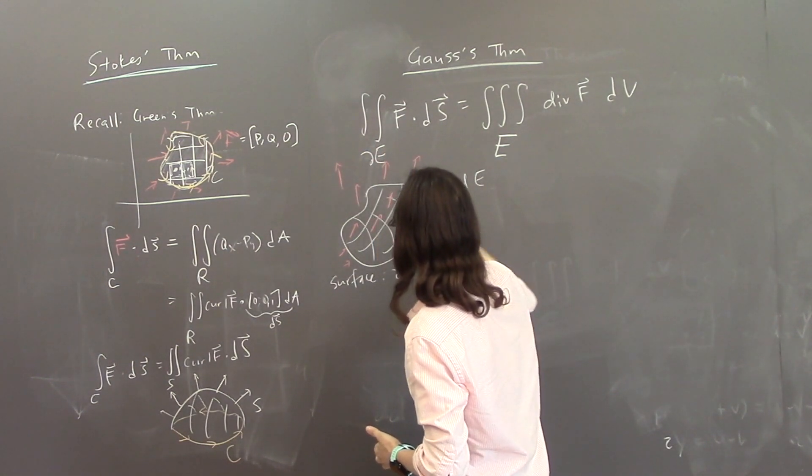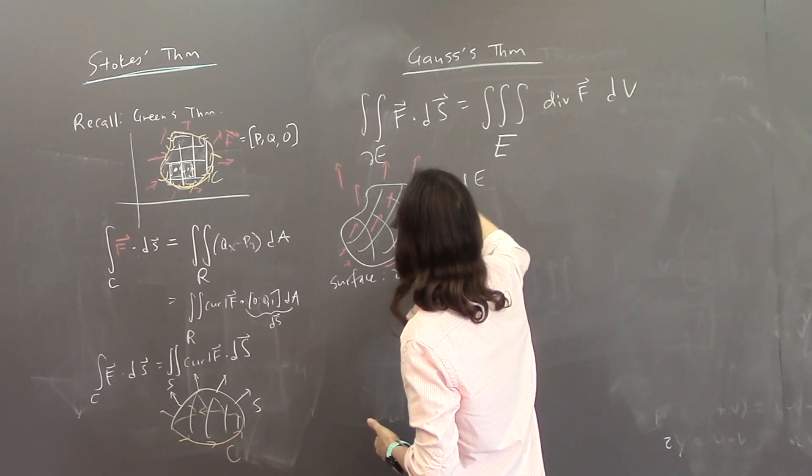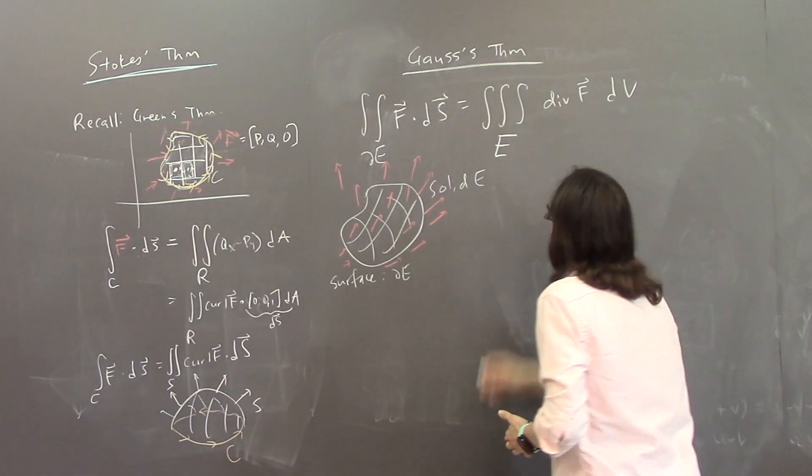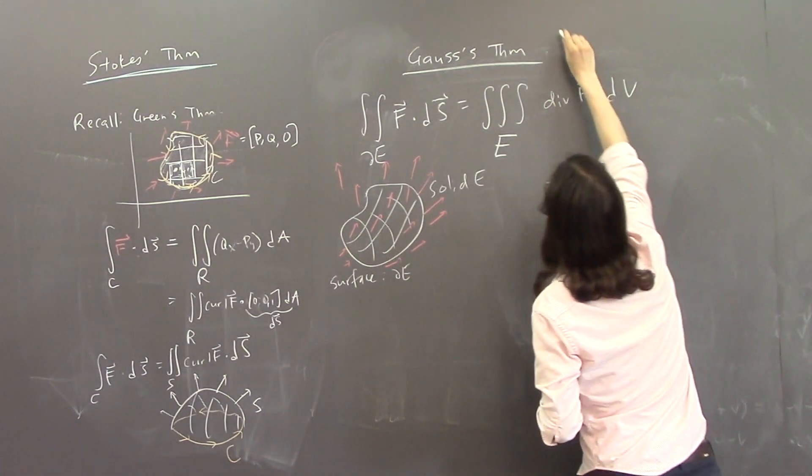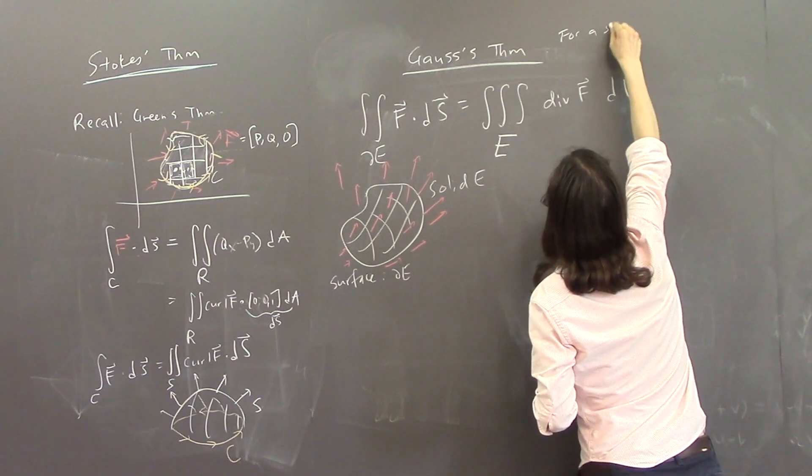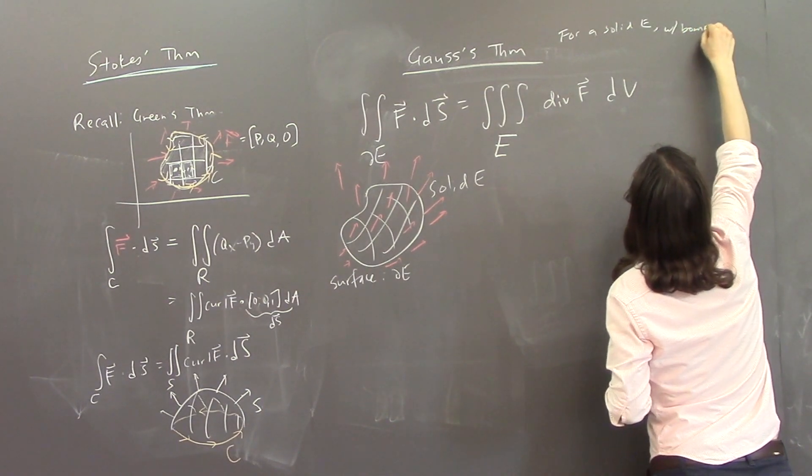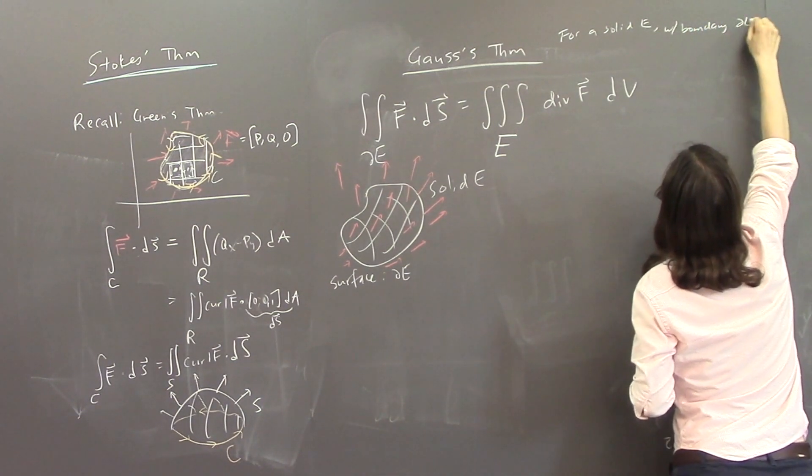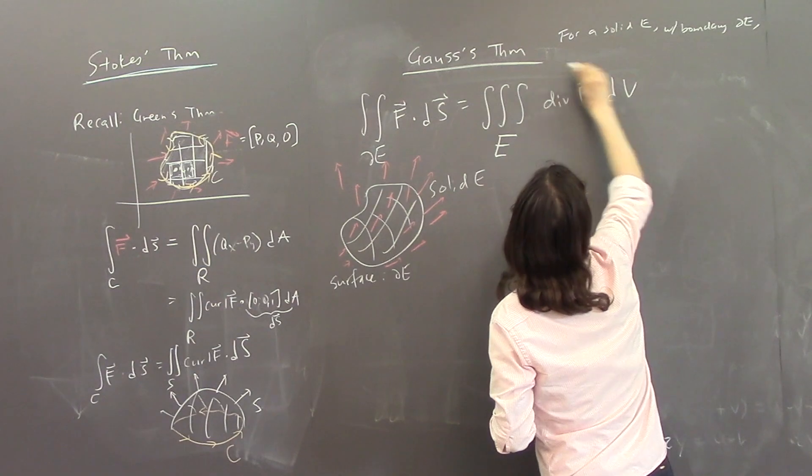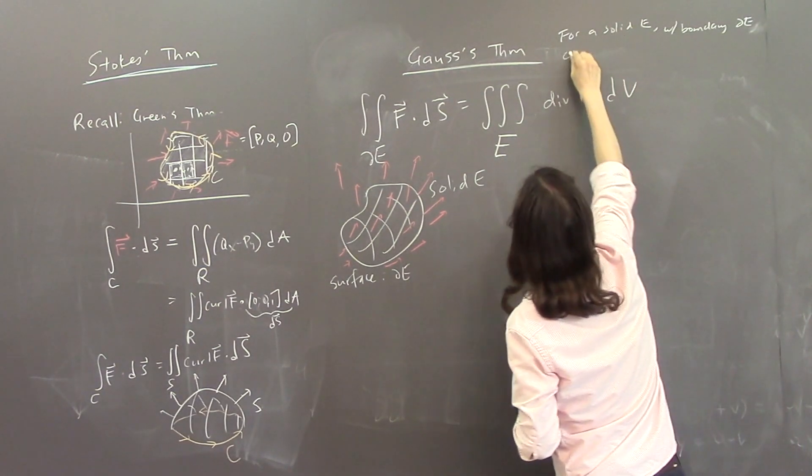Let's see, this has, like, hypotheses. So for a solid E with boundary of E, boundary of E has to be oriented out,